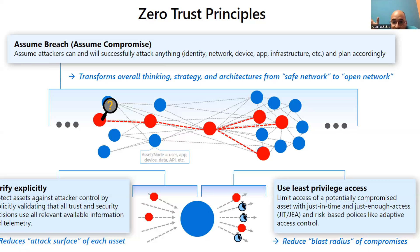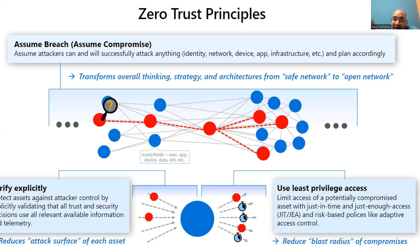What do these mean? Verify explicitly simply means we won't trust you — we will always authenticate and authorize you based on all available data points. For example, if you are accessing something and suddenly you start accessing from a different location, that is a data point and we will apply conditions there. We will explore each of these in detail in upcoming videos, but now you have an idea of what verify explicitly means.